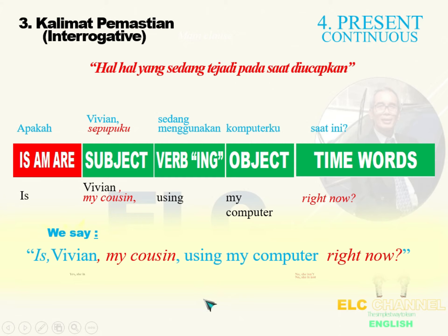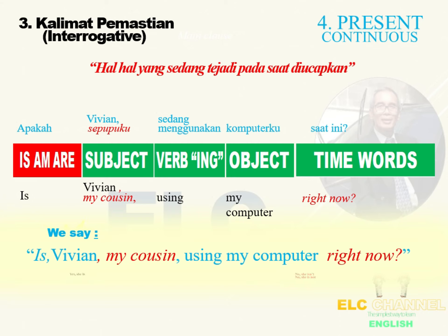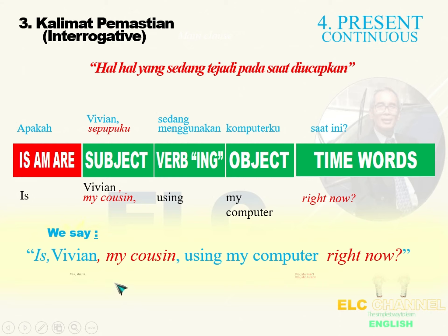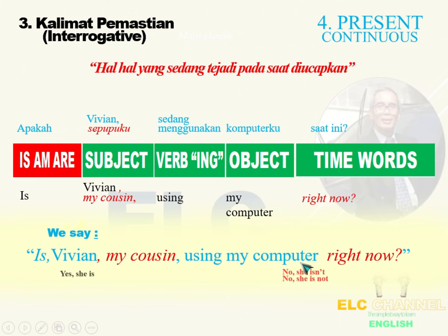Atas kalimat interrogatif ini, jawabannya ada dua: ya dan tidak. Ketika menjawab, pelakunya kita gunakan dengan kata ganti. Vivian, kata gantinya adalah she. Jadi kalau jawabannya ya: yes, she is. Kalau jawabannya tidak: no, she isn't atau no, she is not.